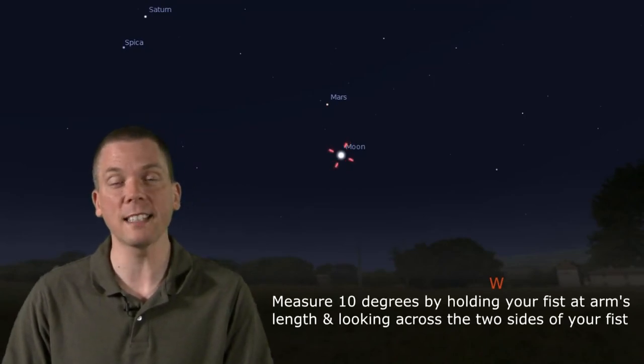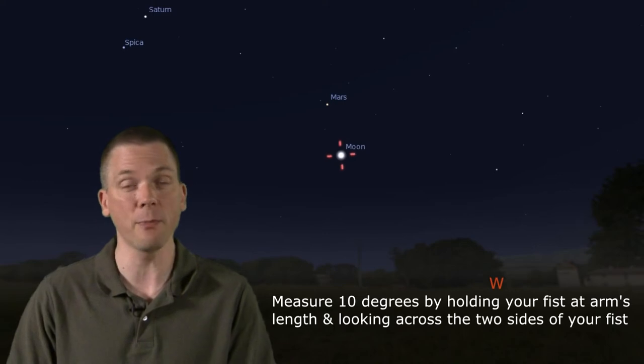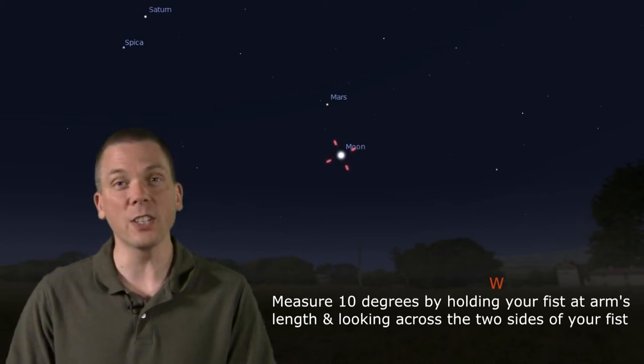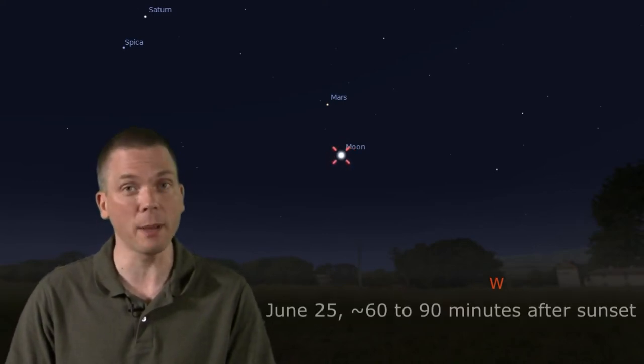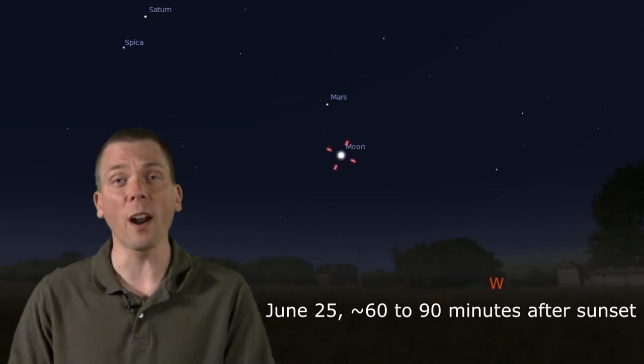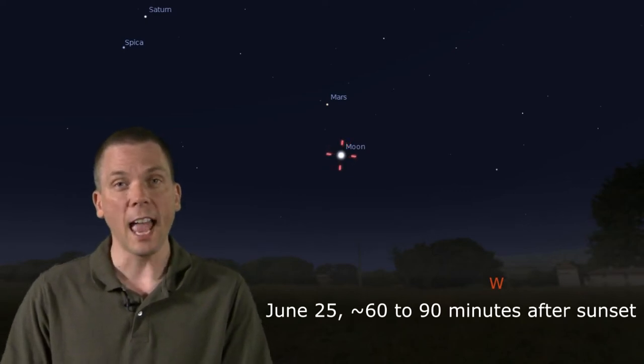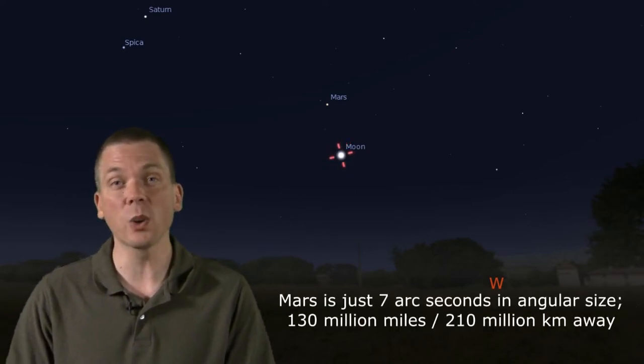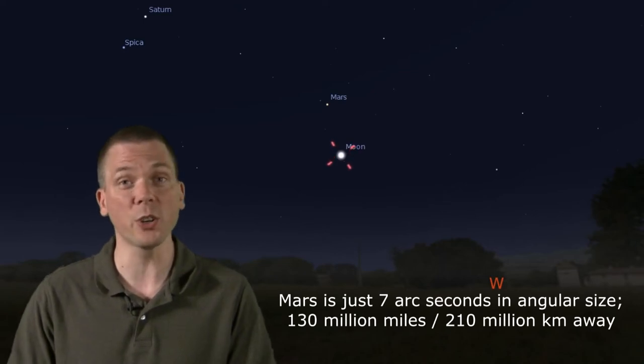This week, the moon makes some visits to planets and celestial sites along the ecliptic. Starting on the 25th, the waxing crescent moon is less than a fist width away from the red planet Mars. This will make a nicer naked eye view than telescopic, as Earth is far outpacing Mars around the sun, and its angular diameter is quite small presently, at just under 7 arc seconds, a tiny disk in most any telescope.